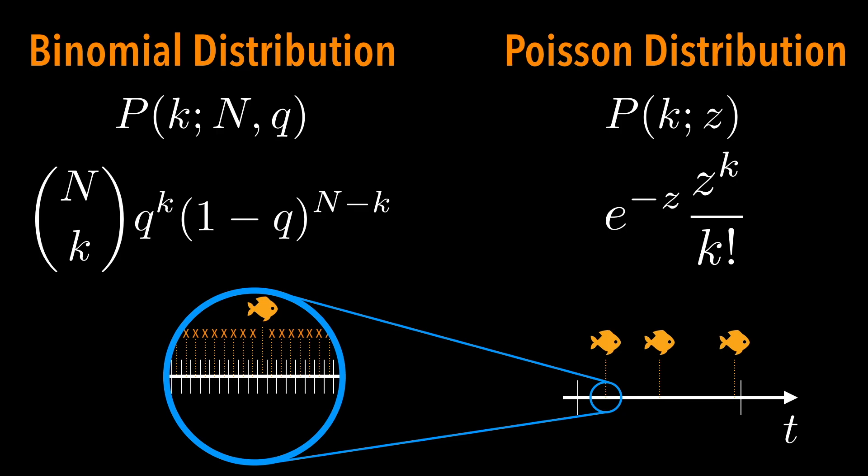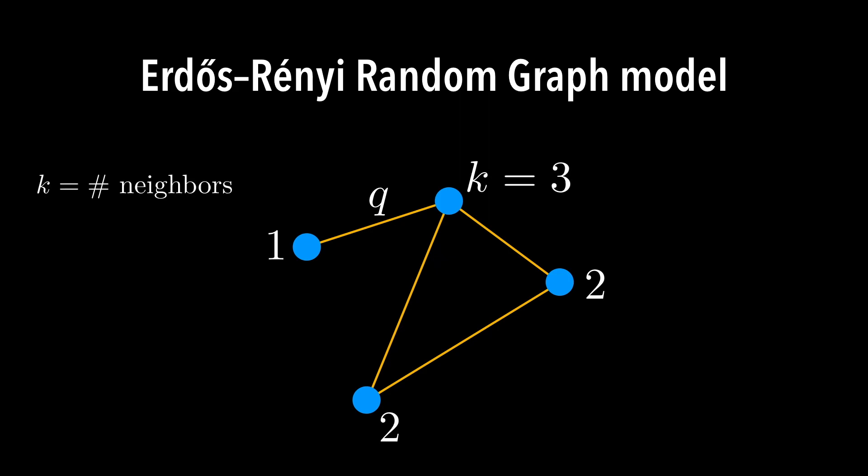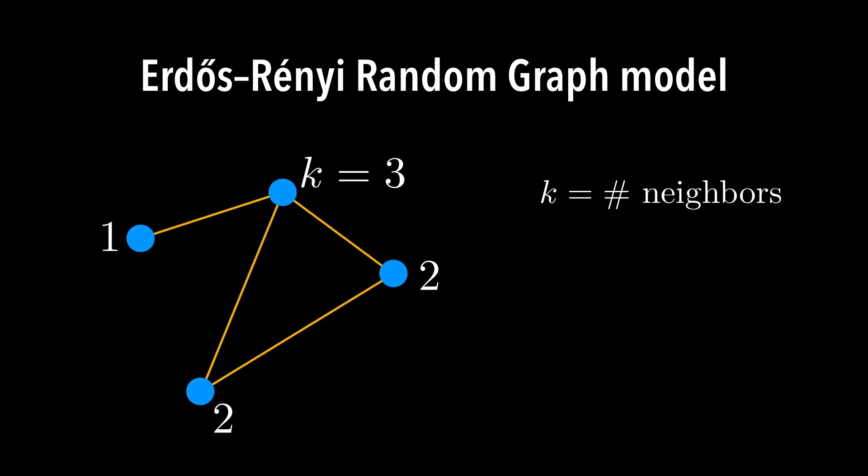And actually the exactly same logic can be applied to one of the fundamental problems in network science. The most basic random graph model is called the Erdős-Rényi random graph model. And it goes like this. We have a bunch of nodes. For each pair of nodes, we either connect them or not with the same constant probability q. Once we connect some pairs of nodes, then we can count how many neighbors each node has.